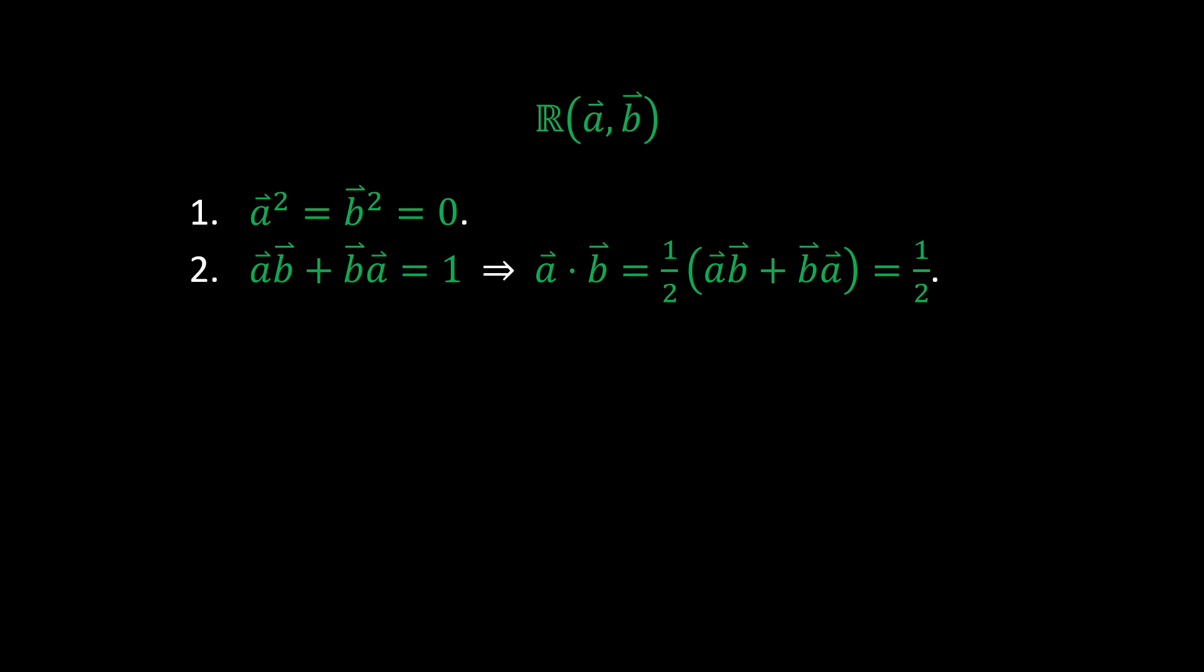Then, if we apply the formal vector inner product definition, we see that the inner product of A and B is 1 half. More properties can also be derived from the given properties.